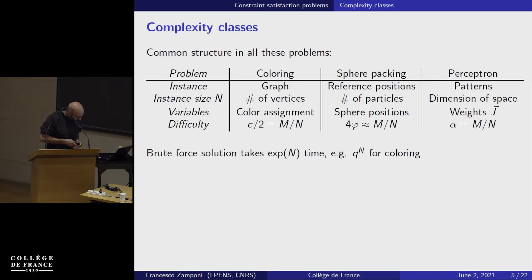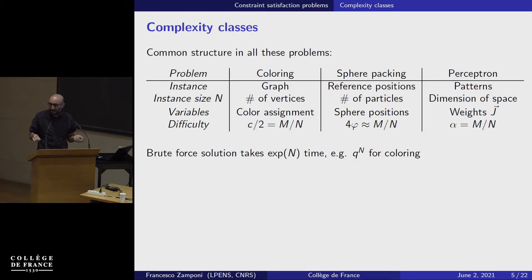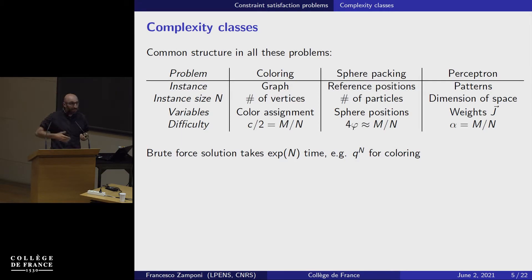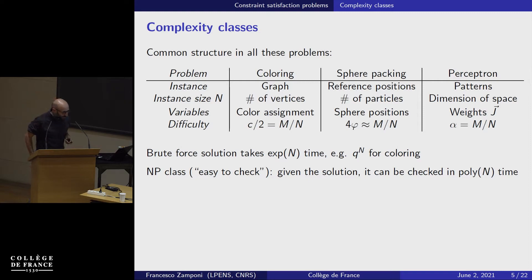What is also common to all these problems is that if you try to solve them by brute force, it takes time exponential in the size of the problem. For example, in graph coloring, you enumerate all possible color assignments — there are q^n possibilities — and stop when you find a valid one. This is huge when n is large. That's why people try to understand when it's possible to do better than brute force.